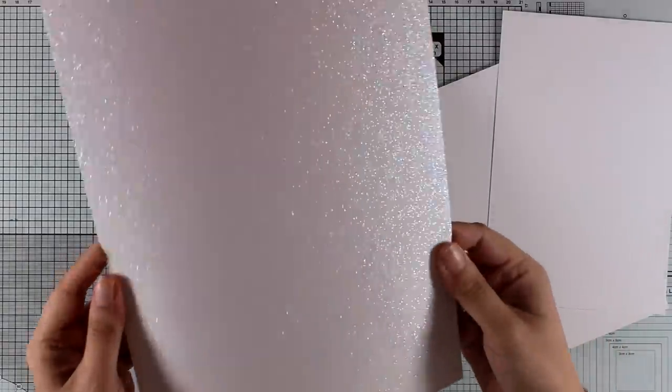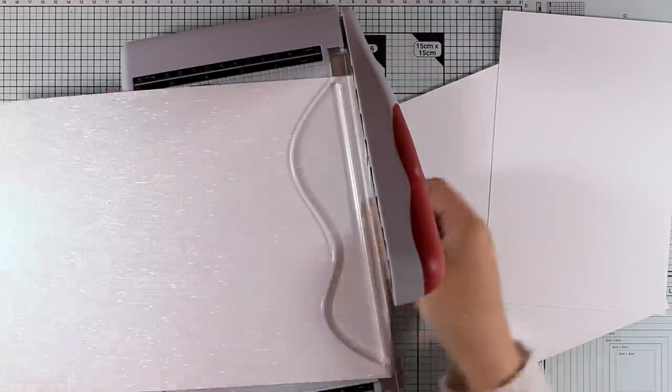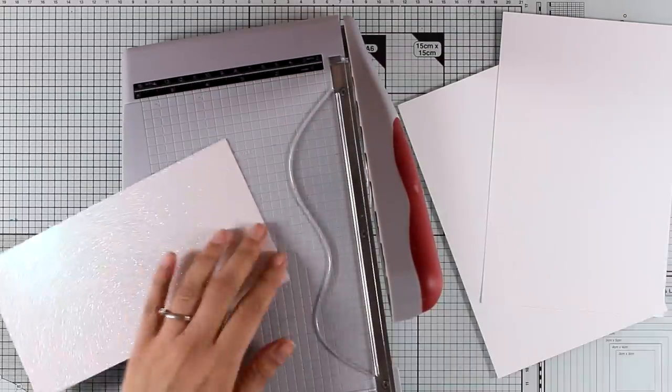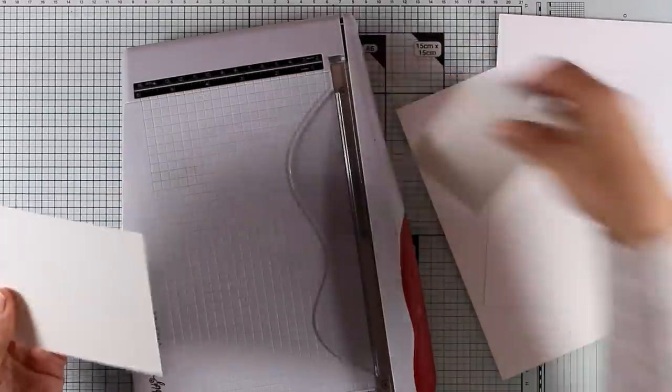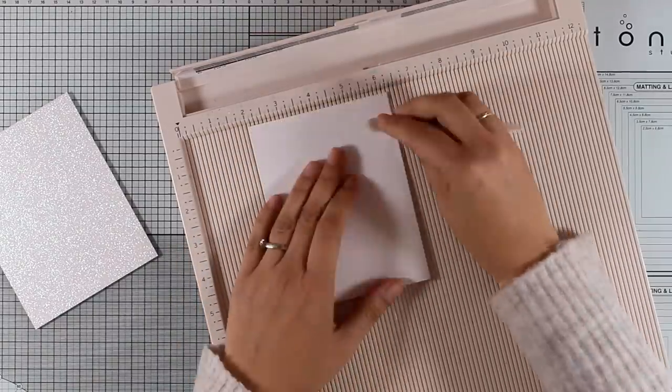I'm going to cut out a panel from this beautiful glitter cardstock by Tonic Studios called Sugar Crystal. It actually comes in way more colors, I think there are twelve of them, all gorgeous. I'm going to cut out a panel that's exactly the card size, so that's four and a quarter by five and a half.